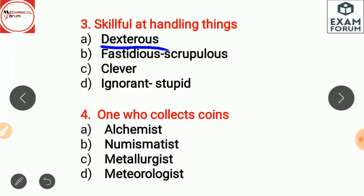One who collects coins is a numismatist. An alchemist is a person who studies alchemy and chemical science. A metallurgist is a person who deals in the science of making alloys and compounds of elements, or who separates metals from their ores. A meteorologist is a person who studies weather.